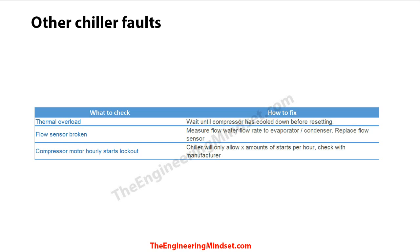Another built-in safety feature is the compressor hourly starts lockout. Manufacturers set a limit on how many times a chiller can start per hour. If loading is very low and the chiller is cycling on and off repeatedly, it will eventually be locked out until the hour resets. This protects the electrical equipment and motor windings from the large inrush current that these chillers draw on startup.